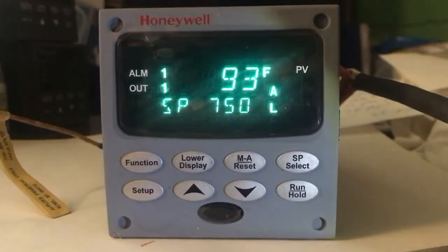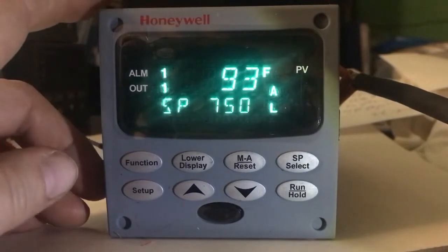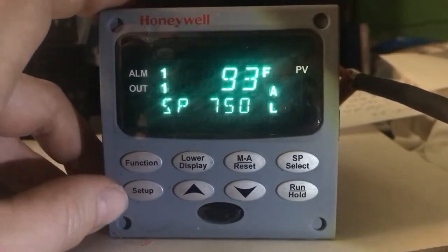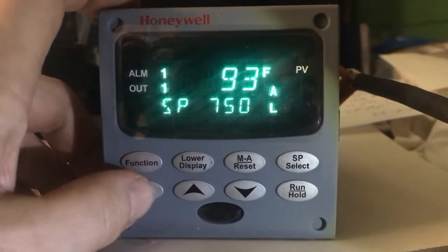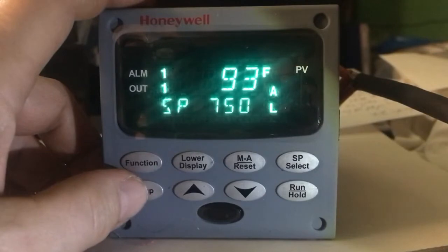This is a UDC 2500 Honeywell controller and I wanted to demonstrate something really quick here. If you have a fault in your thermocouple, you have certain displays that go on. If you press your setup key and go to your input area, I could show you a little bit more about that.